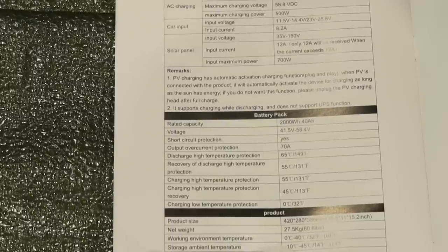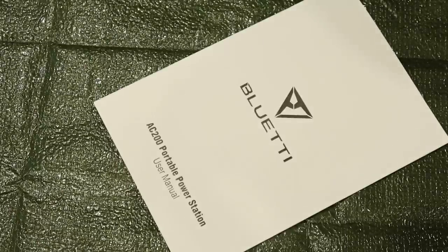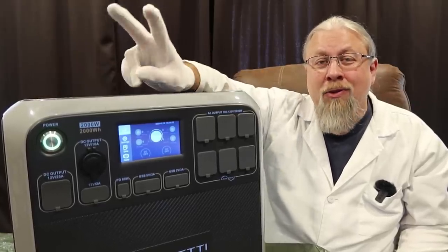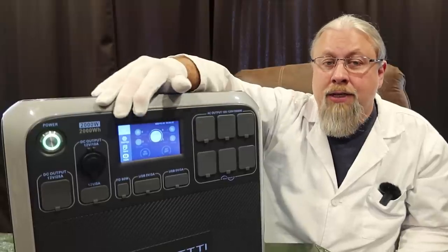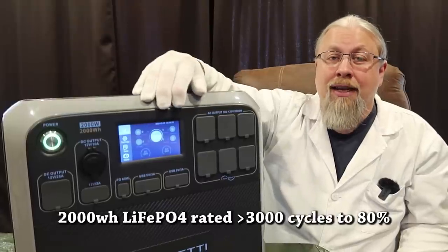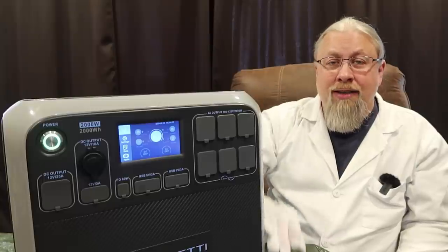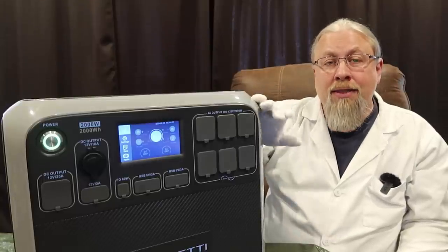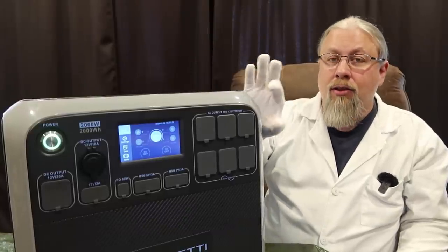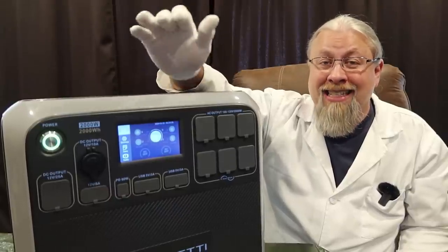And here is page two of the specifications. Note here that, like all lithium batteries, you can't charge it below freezing, but you can actually discharge it below freezing. The Bluetti AC200P sports a 2,000-watt-hour lithium-iron phosphate battery rated at over 3,000 cycles to 80% capacity. What does that mean? That means you can discharge and charge this 3,000 times before you lose the top 20% of the battery capacity.